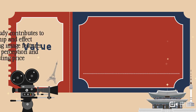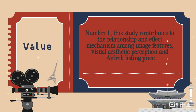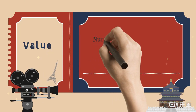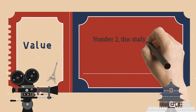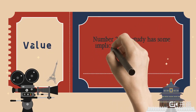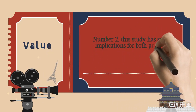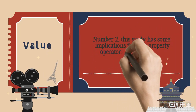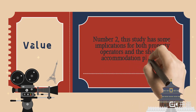Originality value. Number 1, this study contributes to the relationship and effect mechanism among image features, visual aesthetic perception, and Airbnb listing price. Number 2, this study has some implications for both property operators and the sharing accommodation platform.